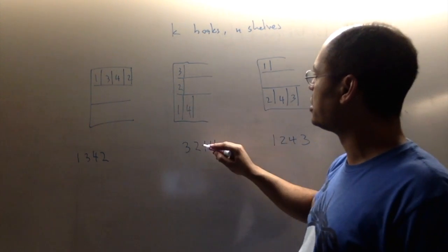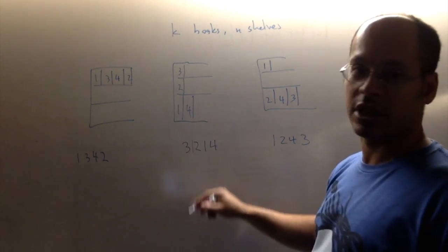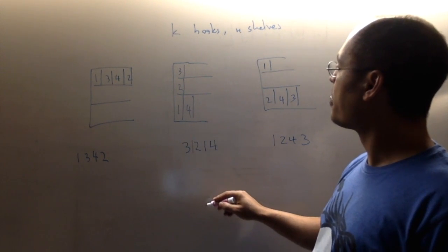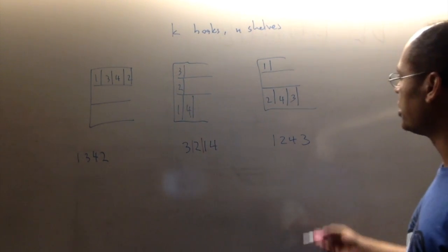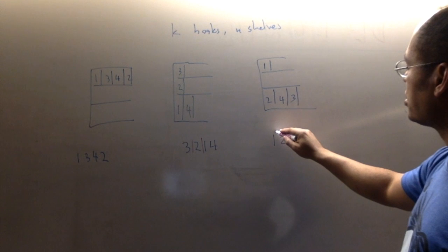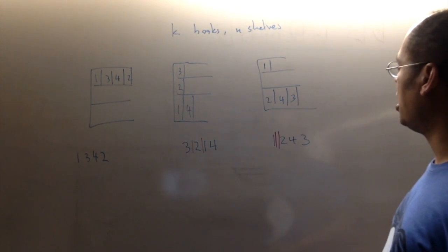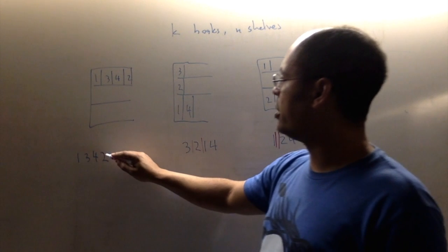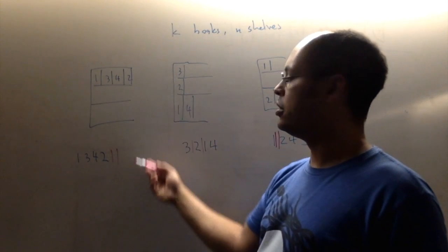So like over here, for example, what I really should say is in between three and two, they're on different shelves. There's like a shelf separator, this pink one. Between two and one-four, there's a shelf separator that has to go there. Over here, there's actually two shelves separating one from two. And in this situation, there's two shelves after two. Everything is on the beginning, right?